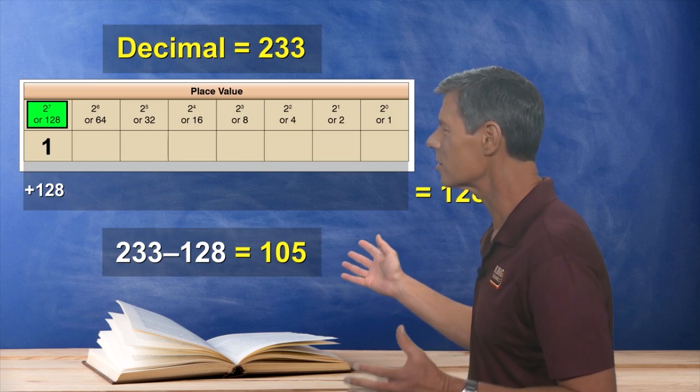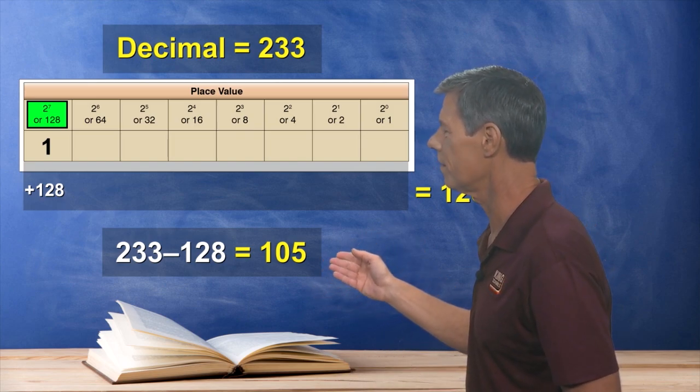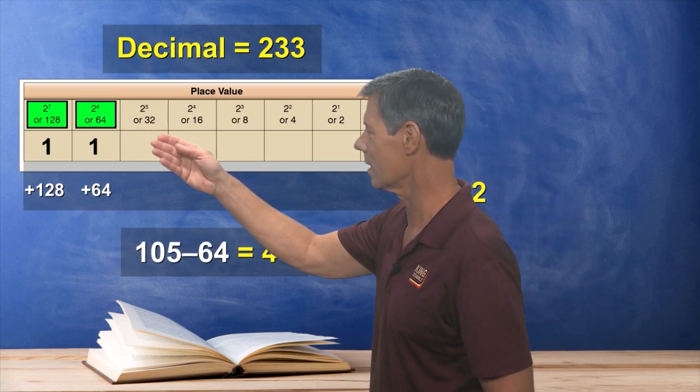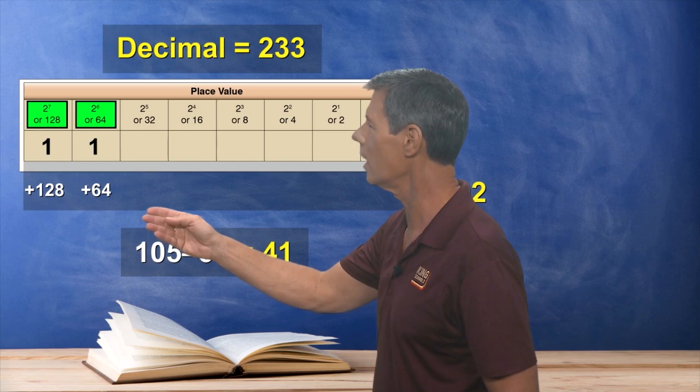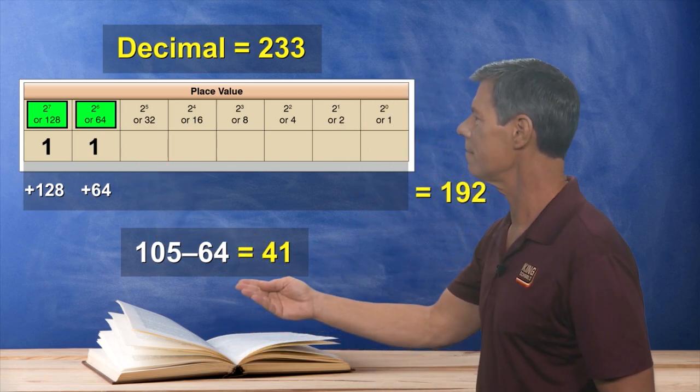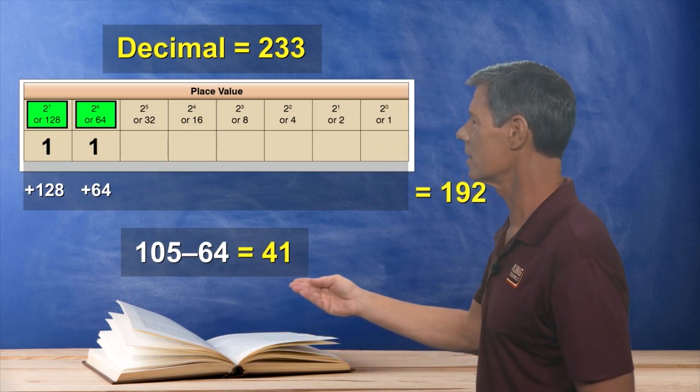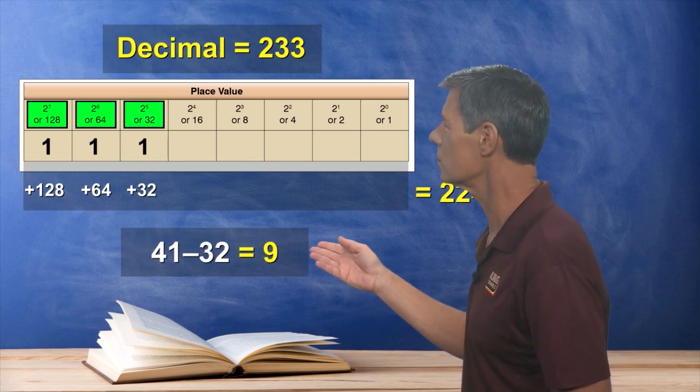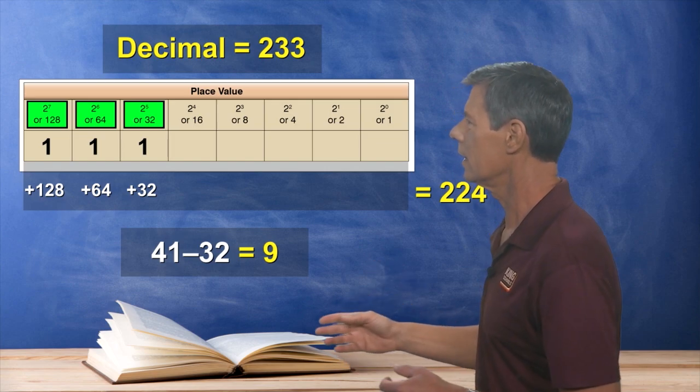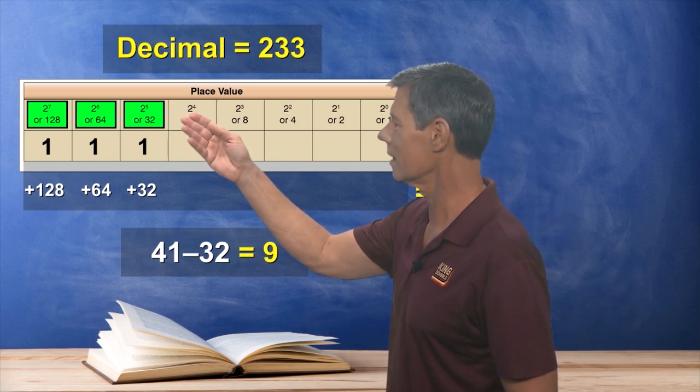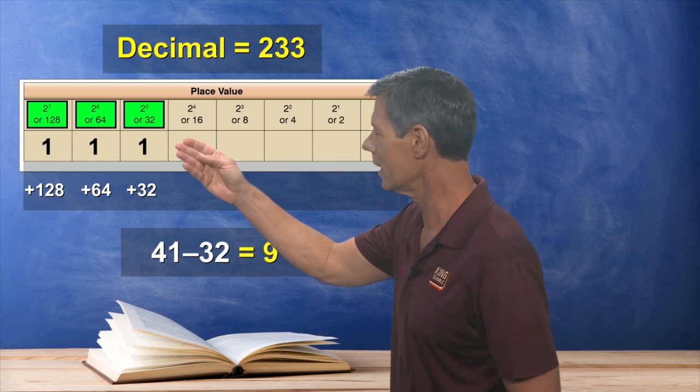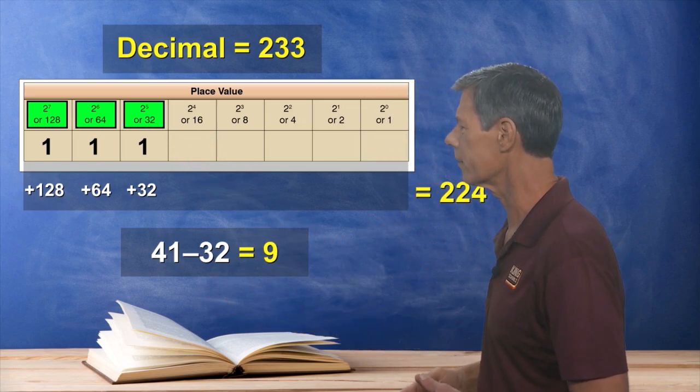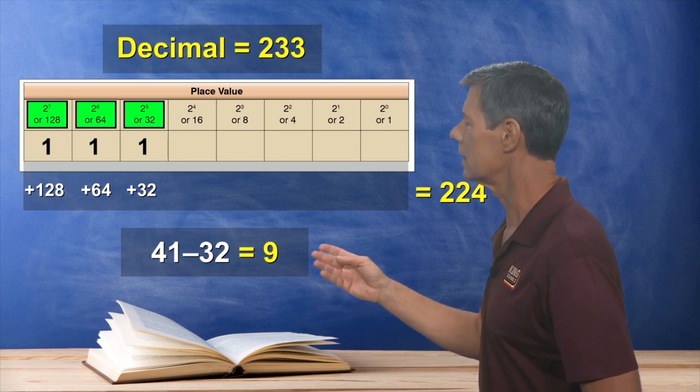So what's the next biggest number we can subtract from 105? Well, it looks like it's this 64 value right here. So we'll put another 1 in that column, and 105 minus 64 gives us 41. Now again, we'll look at the next biggest number that goes into 41, and that would be 32 right here in the next column. Now add another 1 here, and then subtract 32 from 41, just like we've been doing. And that leaves us with 9 left over.